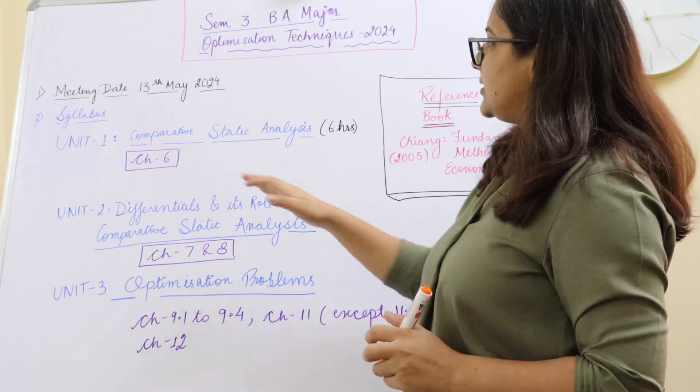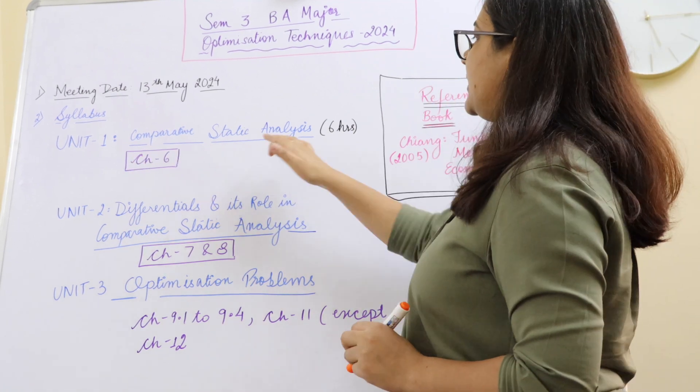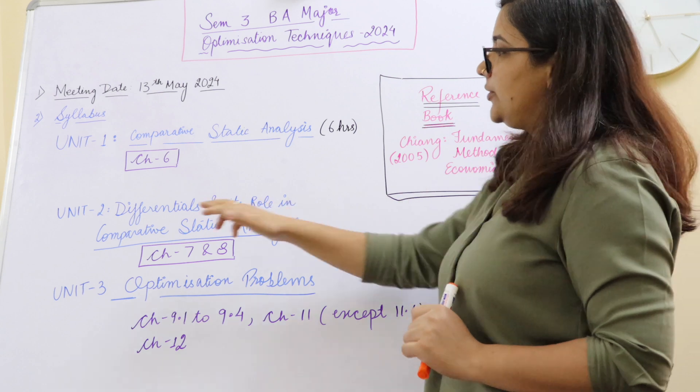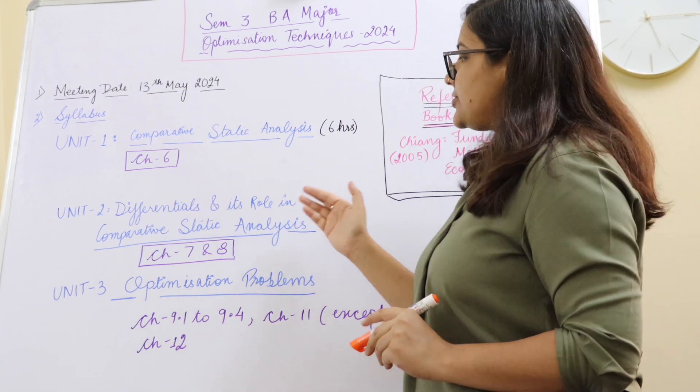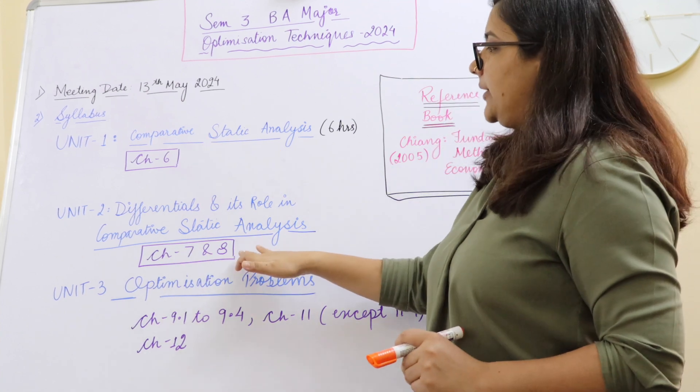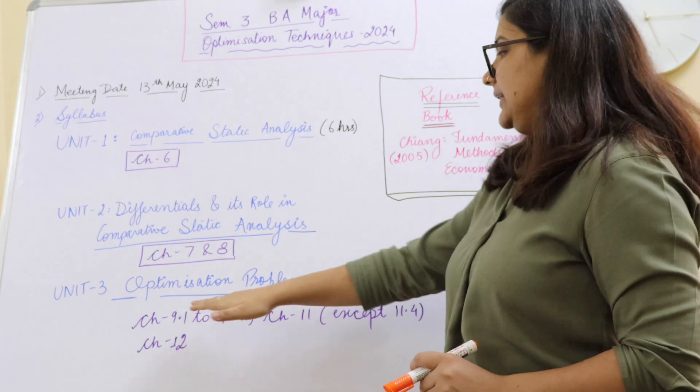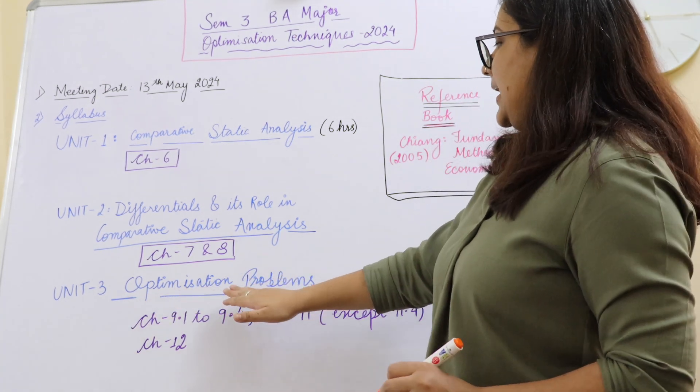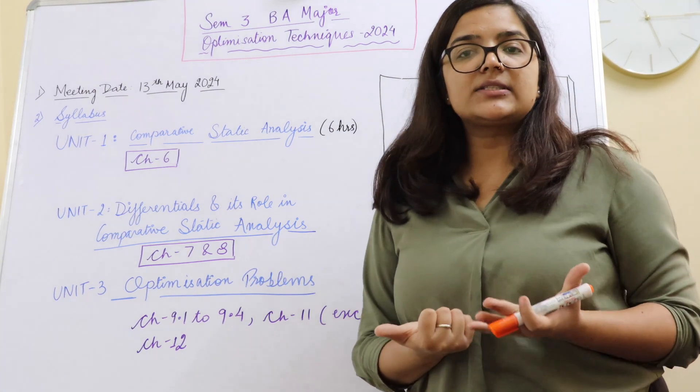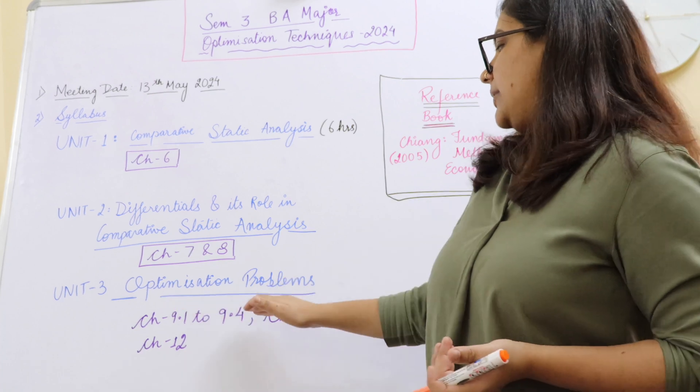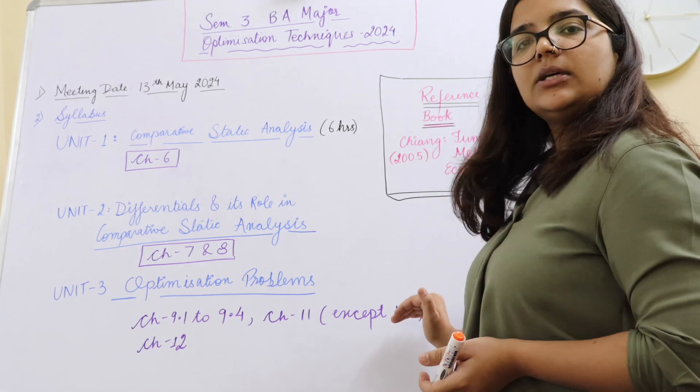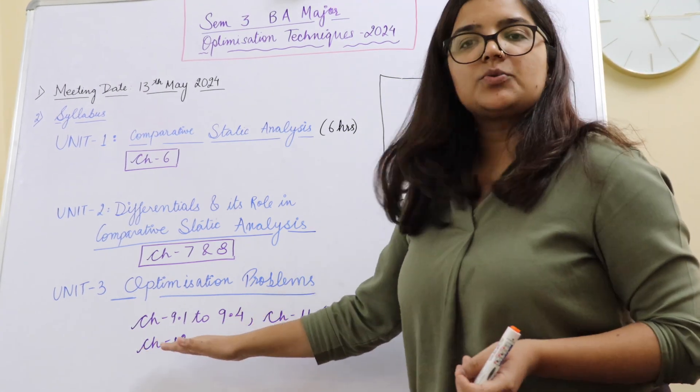So the syllabus that we are going to have is unit number 1 will be comparative static analysis and the reference for this will be chapter number 6 from this particular book. Unit number 2 will be differentials and its role in comparative static analysis. The reference will be chapter number 7 and chapter number 8 from the same book. And the final unit which is unit number 3 is going to be talking about optimization problems. The reference for this is going to be chapter number 9 section 9.1 to 9.4, chapter number 11 wherein you have to skip section number 11.4, and we have chapter number 12 as well.